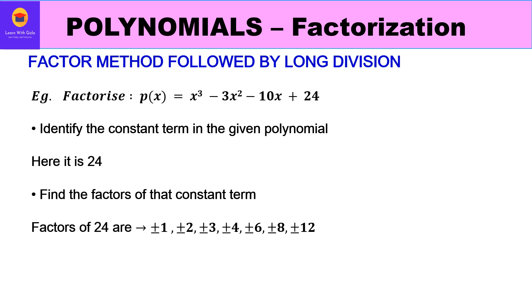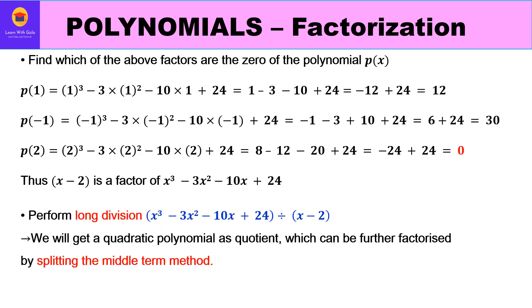Using the same example: p(x) = x³ - 3x² - 10x + 24. Step one is to find one factor. We take the constant term 24, list its factors — ±1, ±2, ±3, ±4, ±6, ±8, ±12 — and check which gives a zero of the polynomial by substitution.